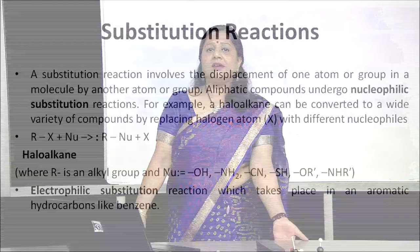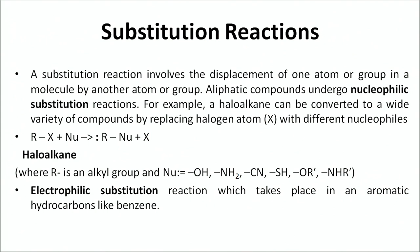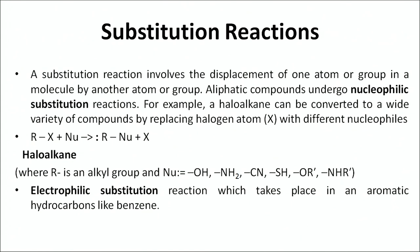Let us consider the first reaction — substitution reaction. Substitution reactions are of two types: nucleophilic substitution reactions and electrophilic substitution reactions. In a nucleophilic substitution reaction, one of the atoms in an alkyl group is substituted by a nucleophile. For example, alkyl halides are taken and a nucleophile attacks them, substituting X where X is a halogen — forming products such as with chlorine, fluorine, or bromine.